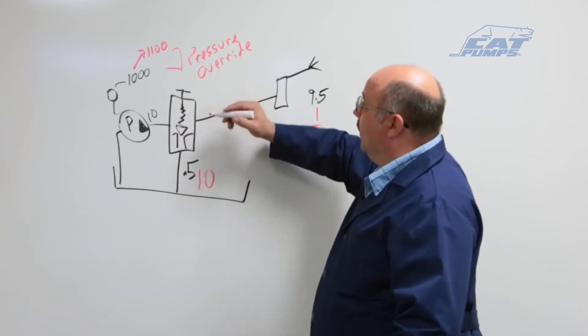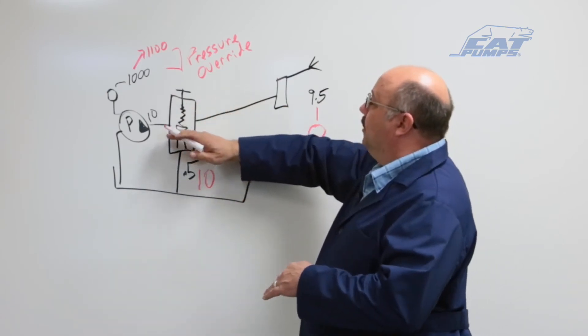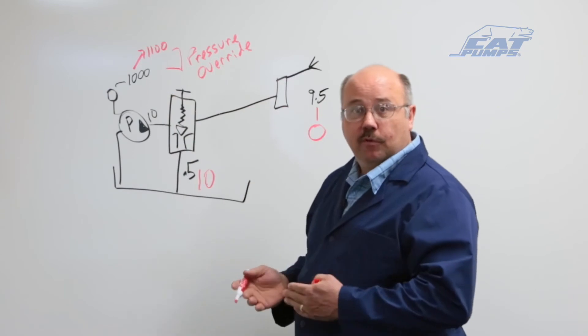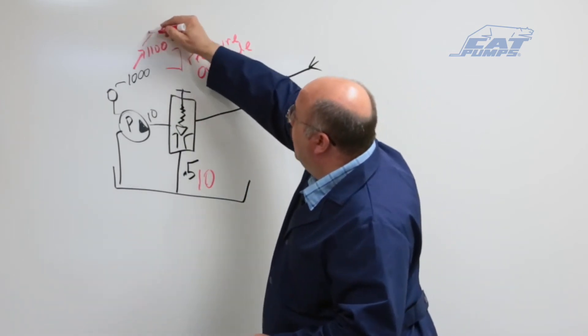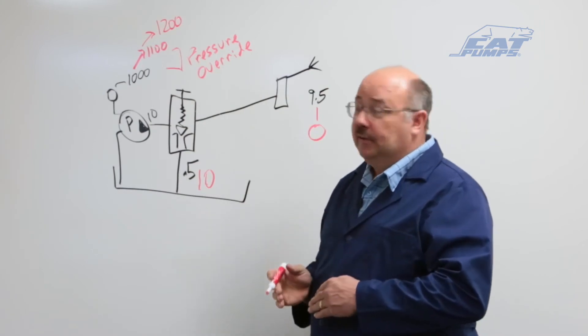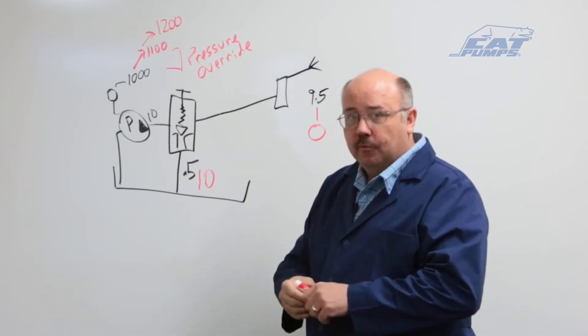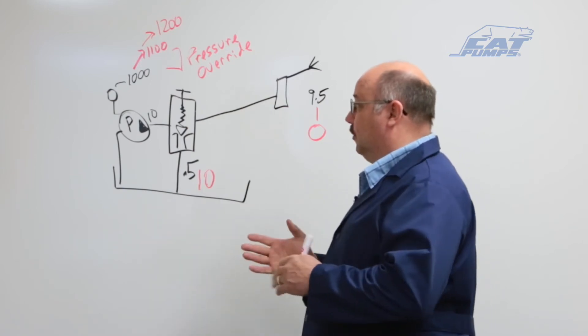...a 3000 psi rated valve, it's going to have stronger springs in it. To get the poppet to move that same distance, it's going to take more force, then your pressure override may go to 1200 just because you've got stronger springs inside of it. So it's important to keep the right rating on the valve for the system that you're going to run.